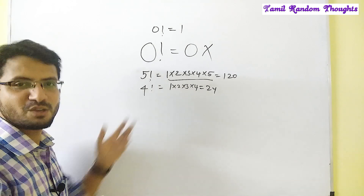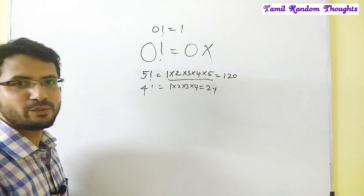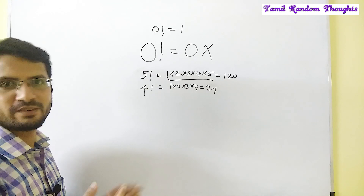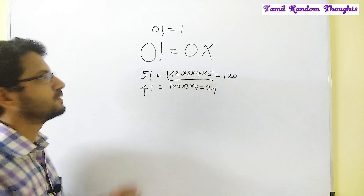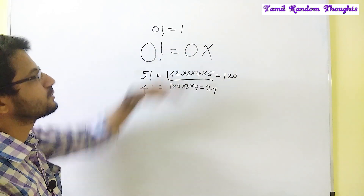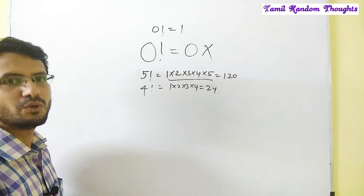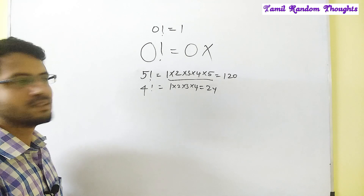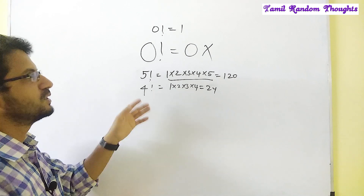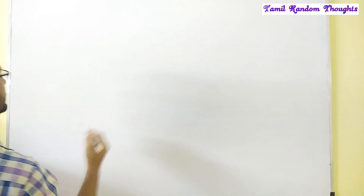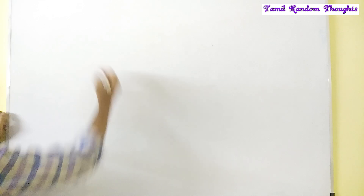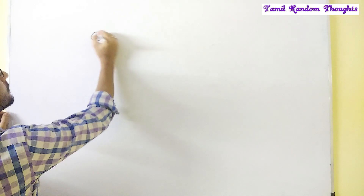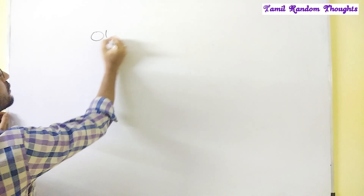The value of 0 factorial is 1. That is mathematics. I will explain that in this video. Let's see. We can find the value of 0 factorial.